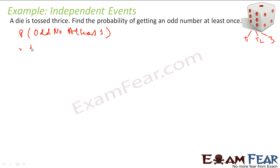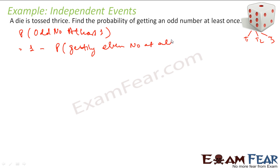This is nothing but one minus the probability of getting an even number at all throws. Probability of getting an odd number at least once is nothing but one minus the probability of getting an even number at all throws.